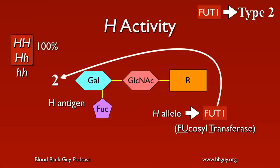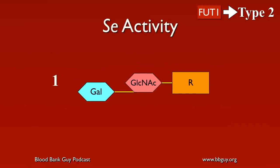Essentially everyone has either the big H/big H or big H/little h genotype. Very few people have the little h/little h genotype — and those are the people potentially involved in the Bombay phenotype. That's the activity on type 2 chains of the H gene product, the fucosyl transferase 1. Now let's move on to the secretor activity.